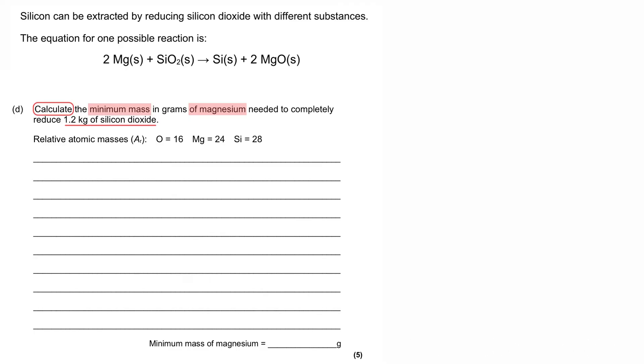My preferred method has us setting it out as if there was a grid there, and there are five rows to my grid, with chemicals being the top row. The chemicals of interest are magnesium, because that's what we've been asked to find the mass of, and silicon dioxide, because that is the thing that we've been given the mass for. And then the second row is mass in grams, the third is relative formula mass, the fourth is moles, and the fifth is the ratio which we get from the equation.